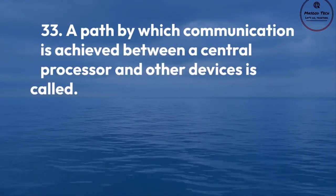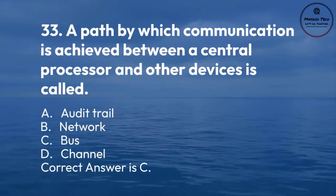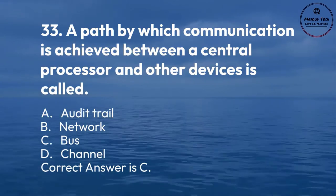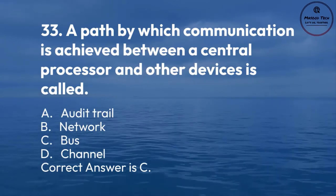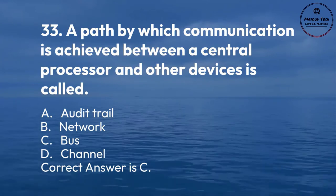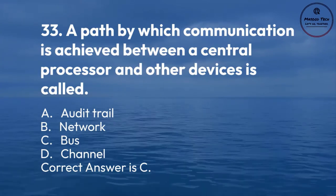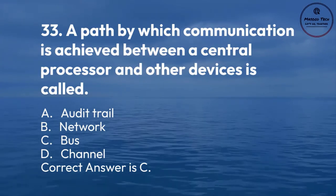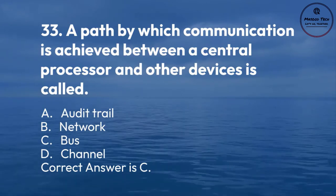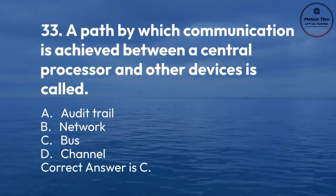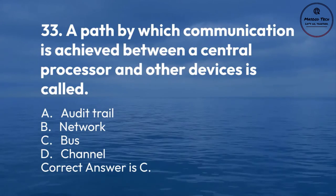Number 33. A path by which communication is achieved between a central processor and other devices is called: A. Audit trail. B. Network. C. Bus. D. Channel. Correct answer is C.